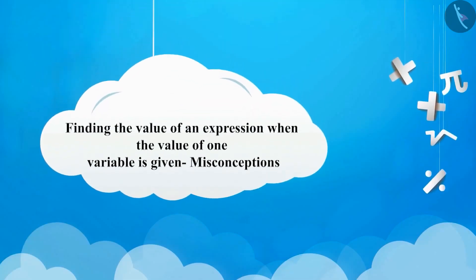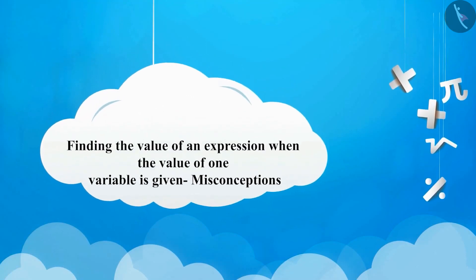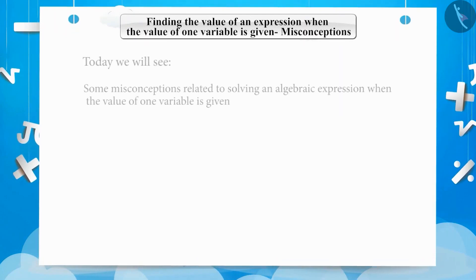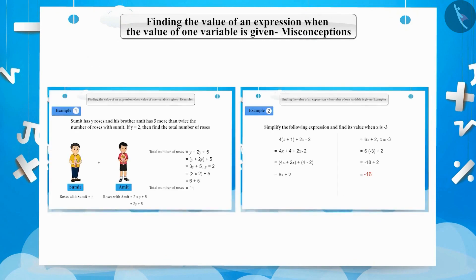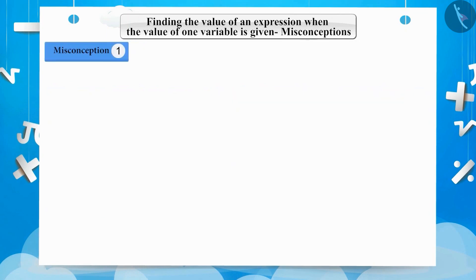Finding the value of an expression when the value of one variable is given — Misconceptions. Today we will see some misconceptions related to this topic. We learned this topic very well with some examples. There are a few misconceptions related to algebraic expressions because of which we make mistakes while solving questions. The first misconception is not paying attention to the exponents.